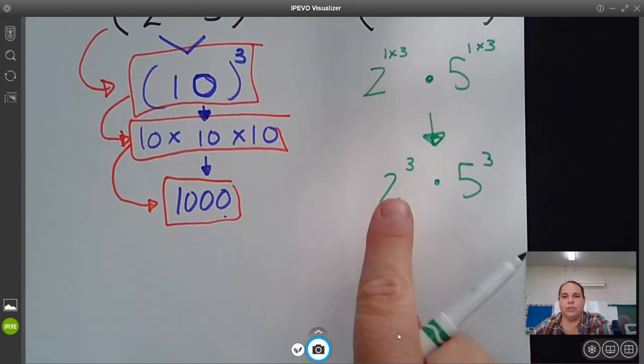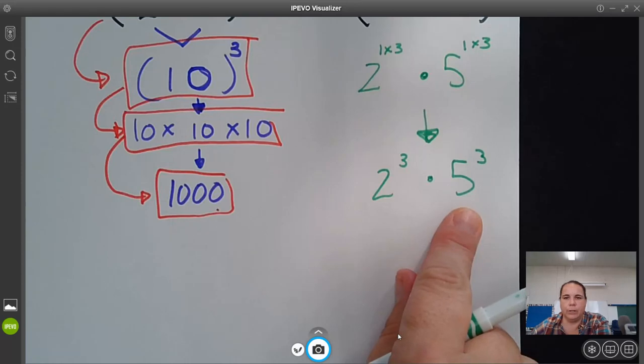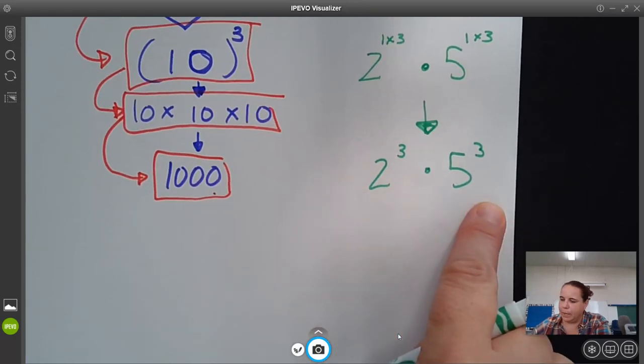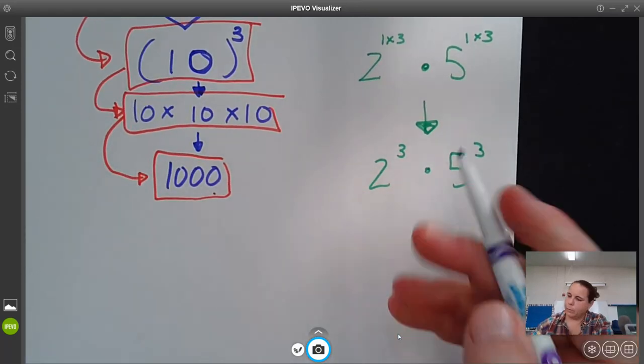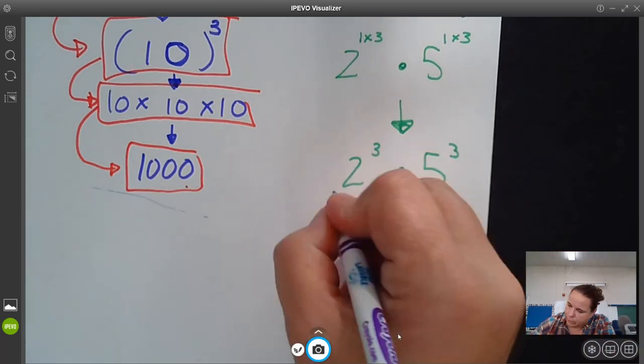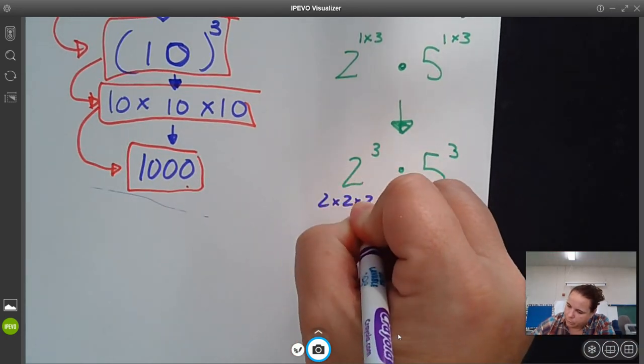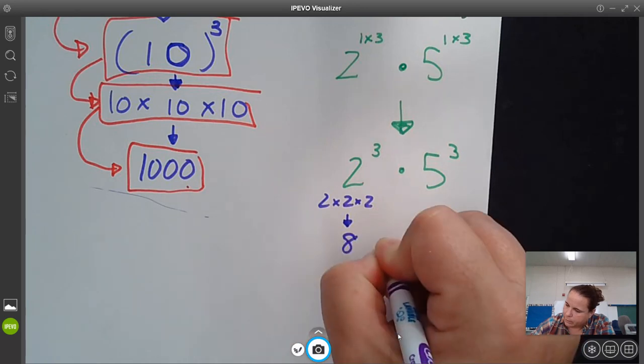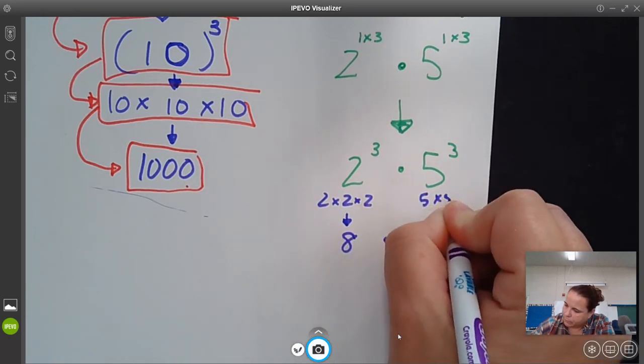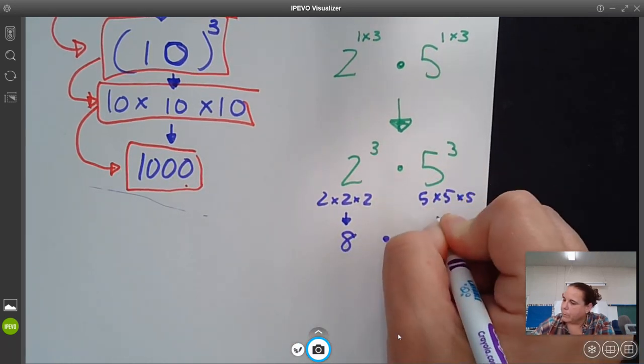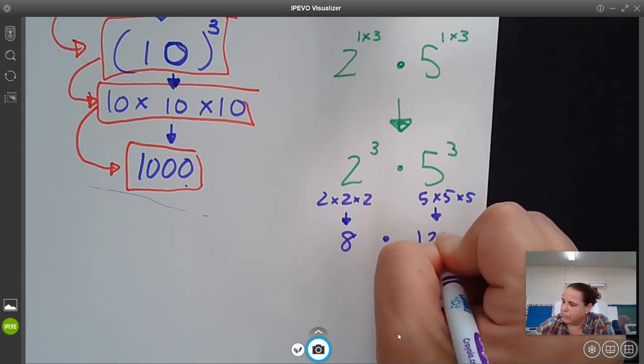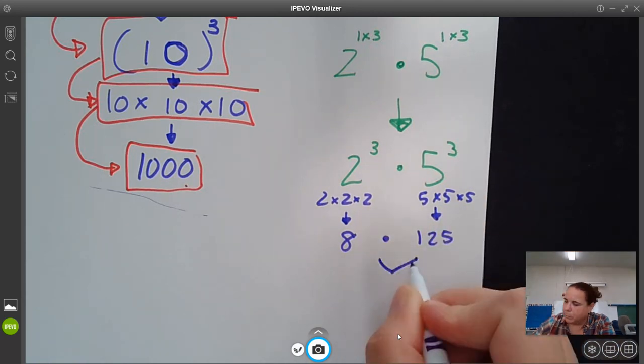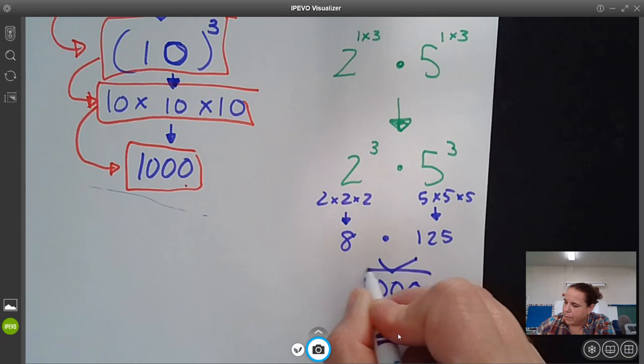And so we can show that this is equivalent by multiplying it out from here. 2 to the third is 2 times 2 times 2, which is 8 times 5 times 5 times 5, this is 125. And then if you multiply those two numbers together, it's 1,000.